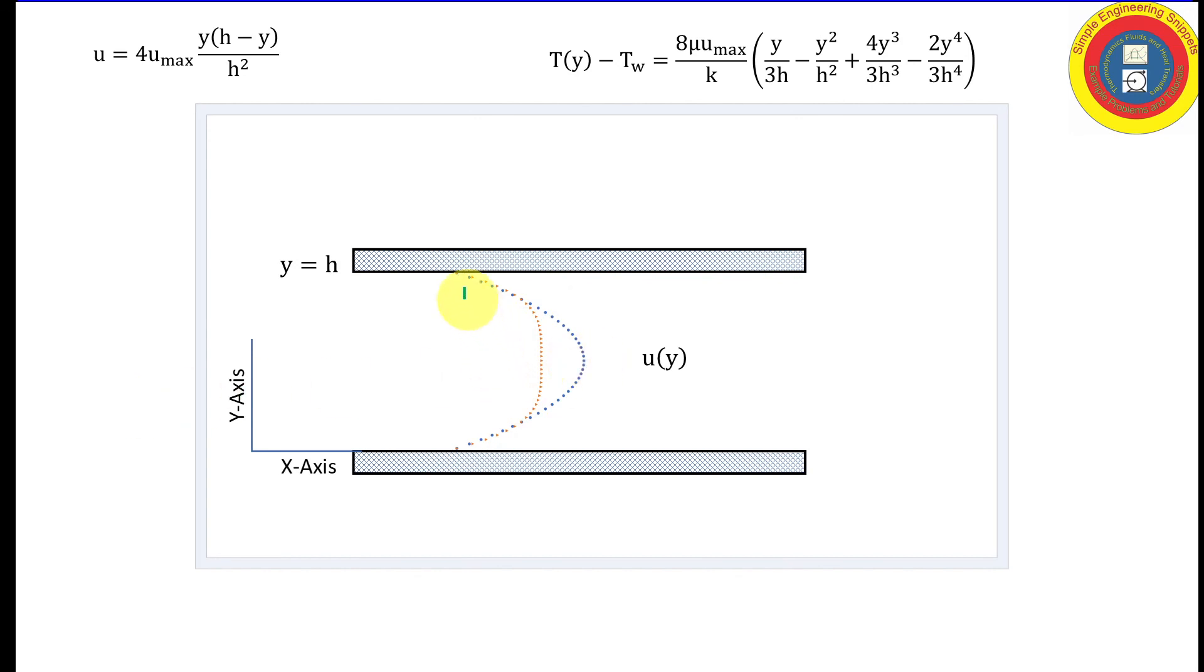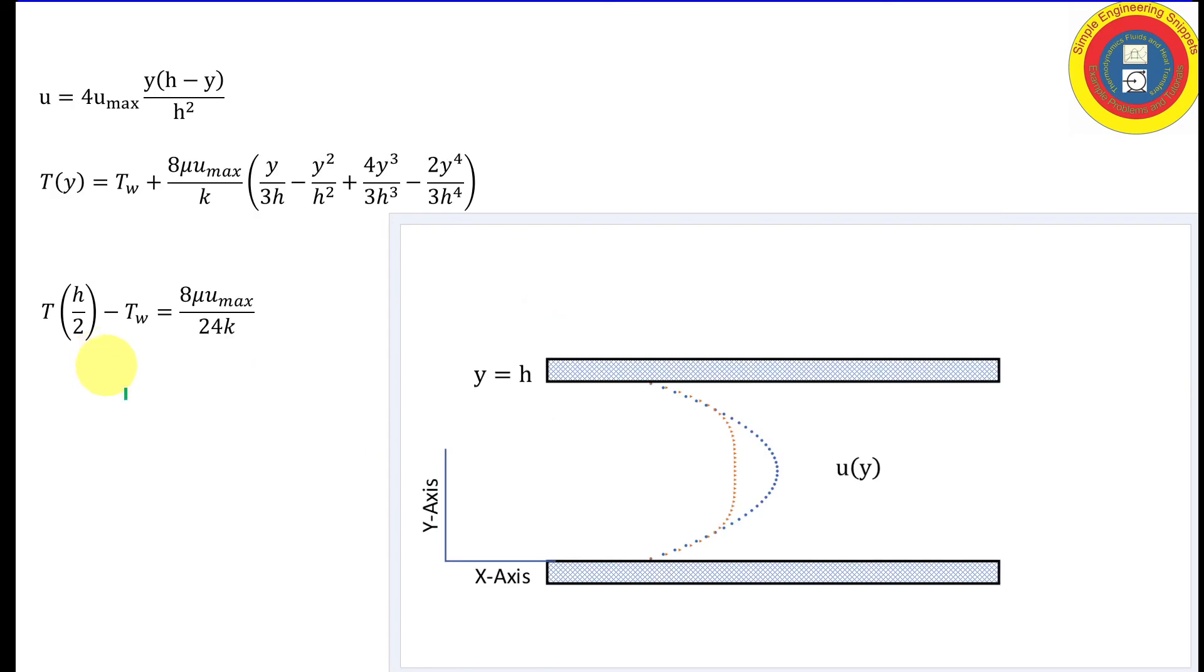And again, the temperatures at the edges, at the walls are Tw, and one thing that we could be interested in is, well, at the center line, how much greater is the temperature than at the walls? And we can solve for that, and we have that here.